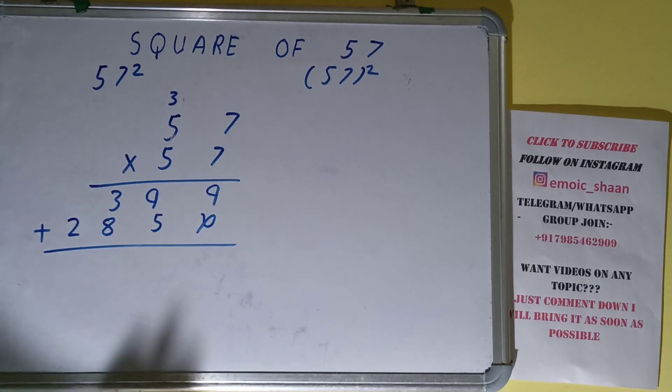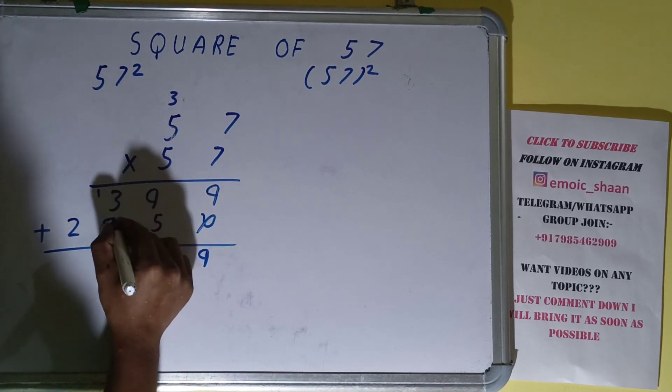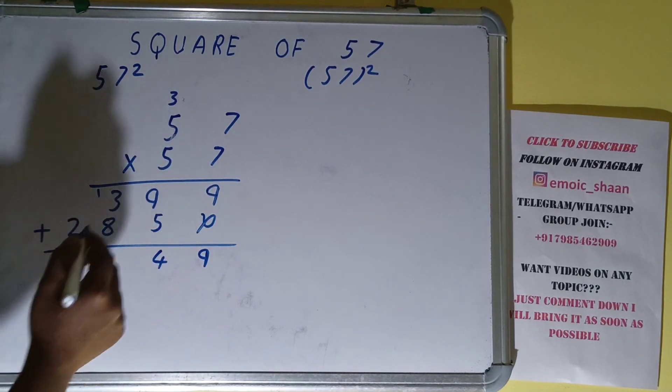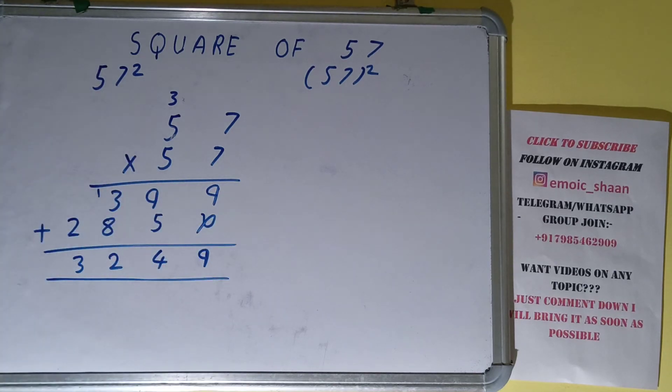Just add them and this will be 9. 9 plus 5 is 14, 4 down, 1 carry. 8 plus 3 is 11, plus 1 is 12, 2 here, and this will be 3. So the answer will be 3249.